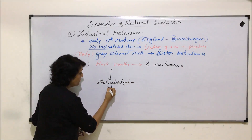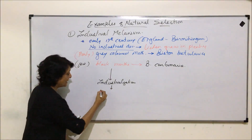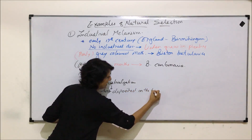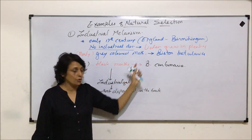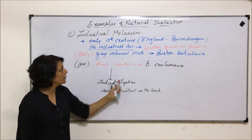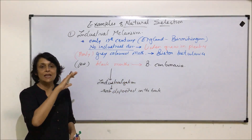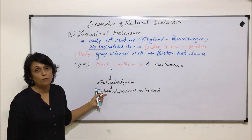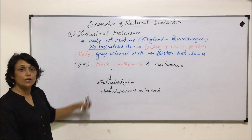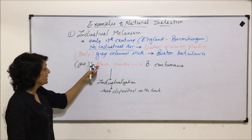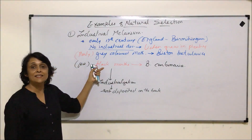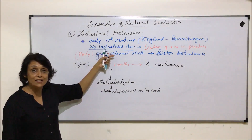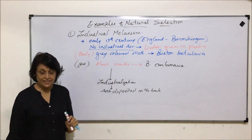The black moths were very few because the lichens were gray, making the black moth easily visible on the gray background. It was eaten up by birds or other bigger animals. After a few years, when industrialization started, factories produced smoke and soot. This soot deposited on the bark, and since lichens are very sensitive to pollution, they started to disappear. The bark color changed from gray to black.